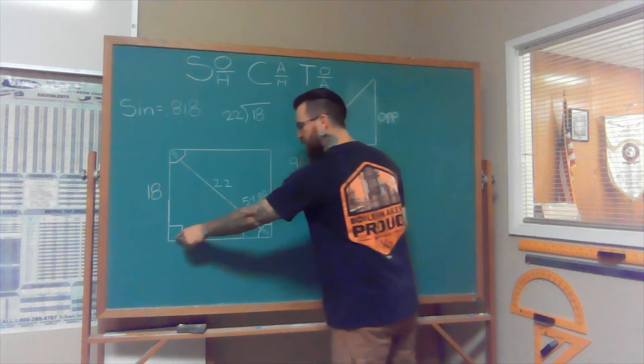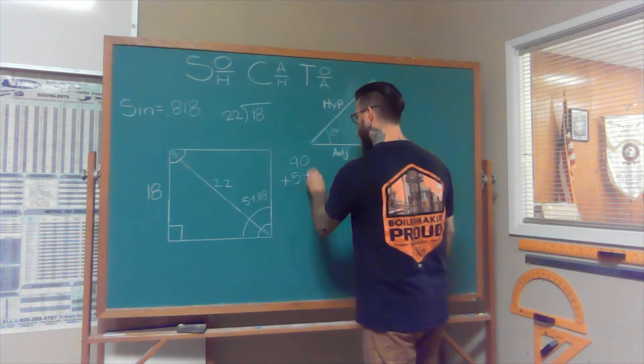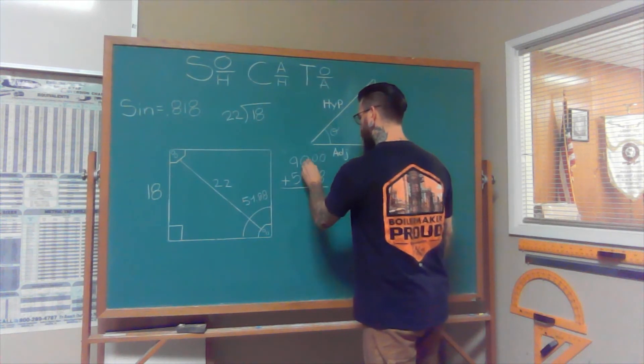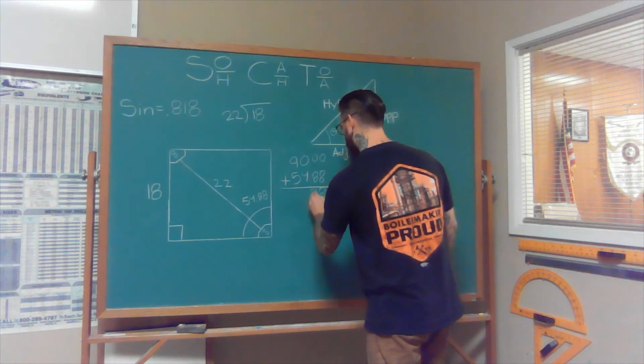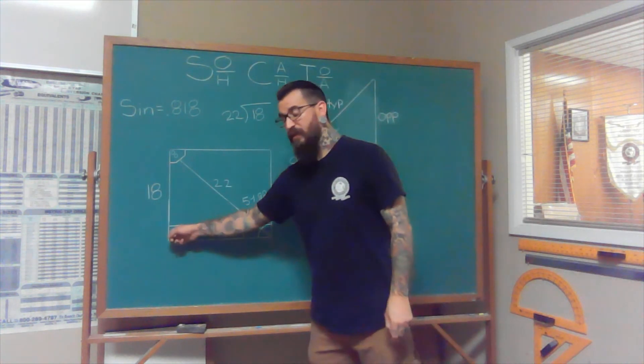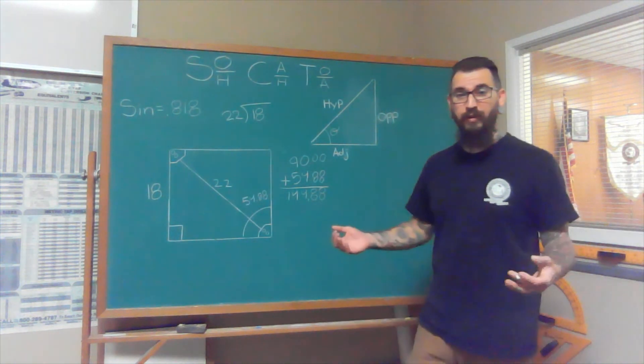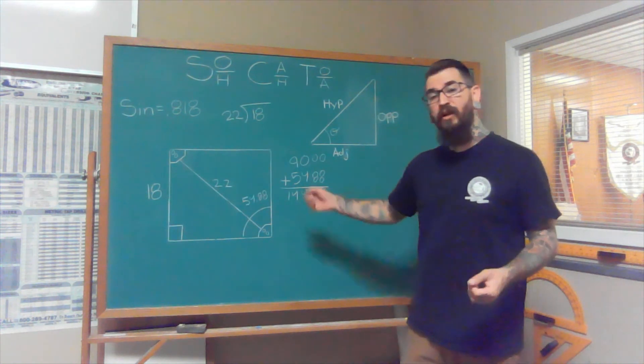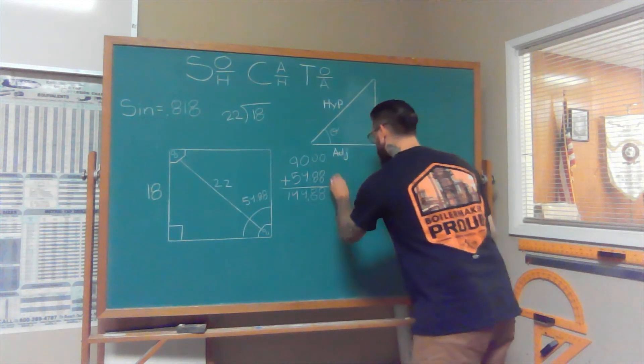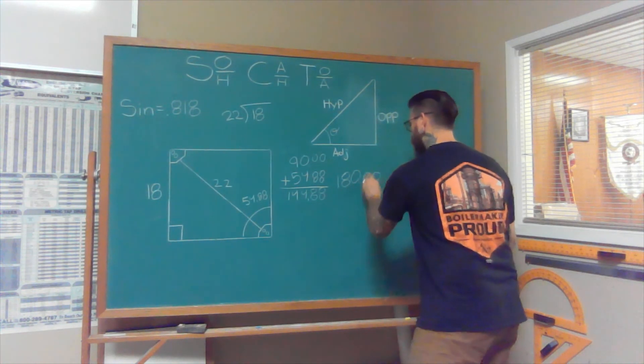90, which is this angle right here, plus 54.88. So when we take this angle and we add it to that angle, we end up with 144.88 degrees. And we know there's 180 degrees in every single triangle. So subtract 144 from 180, and that gives us the missing angle.